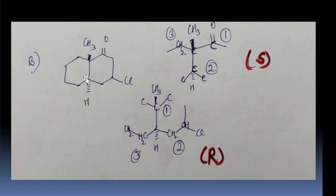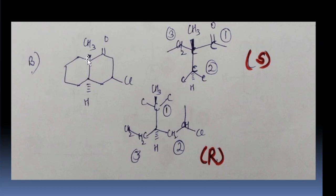Now we discuss the stereochemistry of the second carbon. Here wedge is H, this is CH2, this is CH2. We consider the next carbons: on one carbon this is Cl, on another this is hydrogen, and this carbon has carbon, CO, and CS3. This is number 2, this is 1, this is 2, and this is 3. Going 1, 2, 3 we get R, and the lowest priority is on the wedge, so we get the same configuration: R.